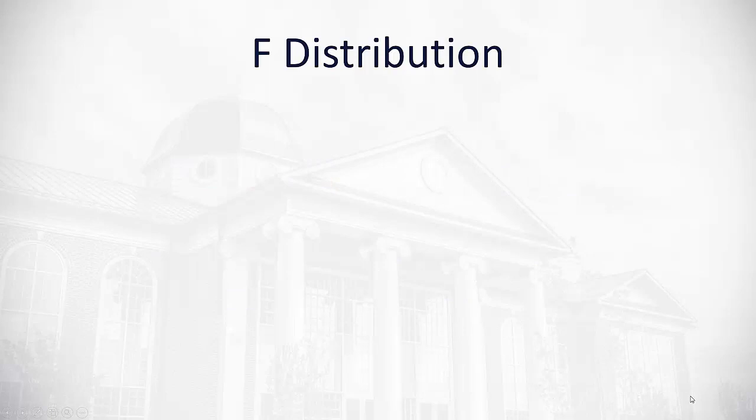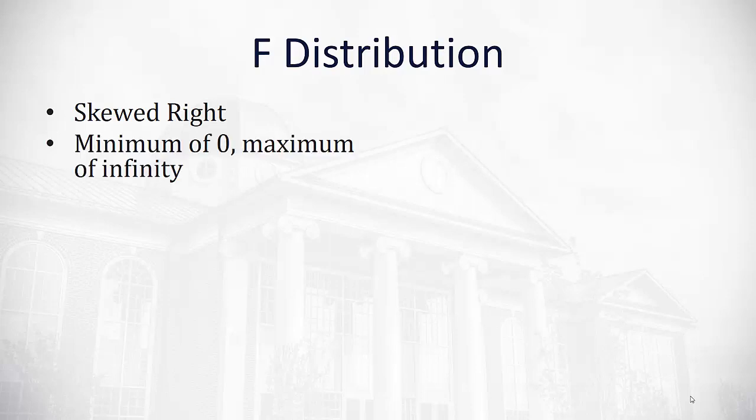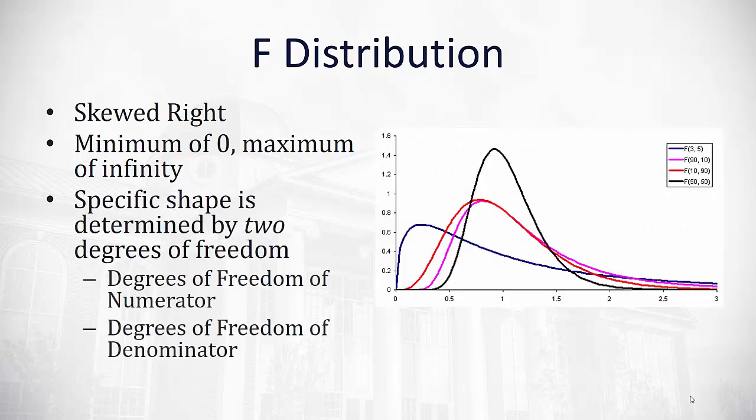But before we do, we have to talk about the F-distribution. The F-distribution, similar to the chi-squared distribution, is skewed right with a minimum of zero and a maximum of infinity. It also has its shape determined by the degrees of freedom, but what makes it different is we'll have two degrees of freedom.